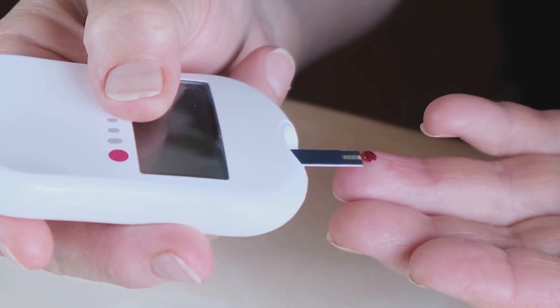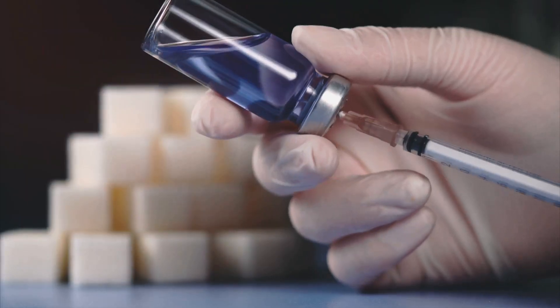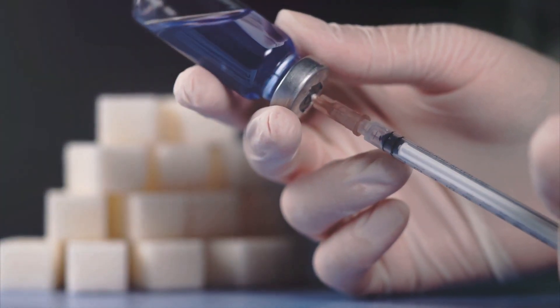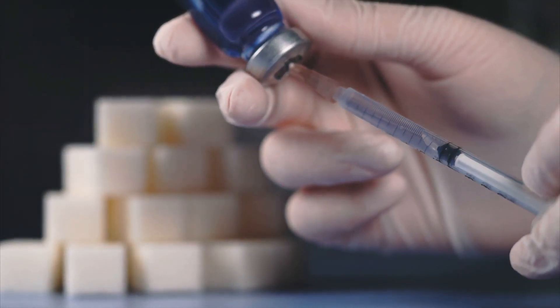One of the major advantages of CGM is its ability to provide immediate feedback. For example, you can see how different foods, exercise, and even stress can affect your glucose levels. This kind of detailed insight can be extremely helpful in fine-tuning your lifestyle for optimal insulin sensitivity.